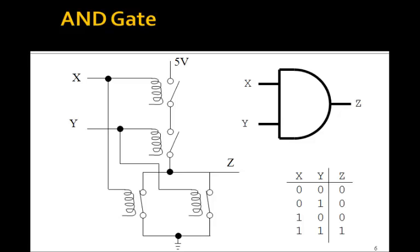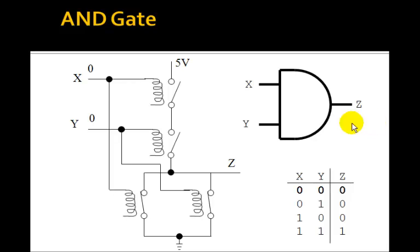How about an AND gate? Well, suppose we take four relays, put two normally open ones in series from the output to 5 volts, put two normally closed ones in parallel to ground, and let's see what happens. If the two inputs are 0, we want the output to be 0. Well, these two are closed, so they both go to ground. We have 0, these two are open.